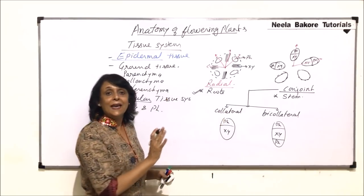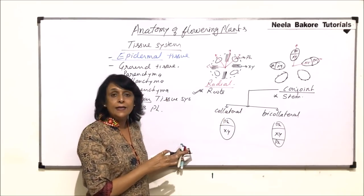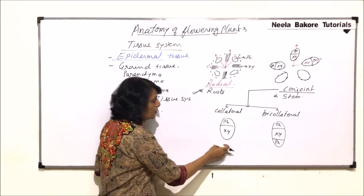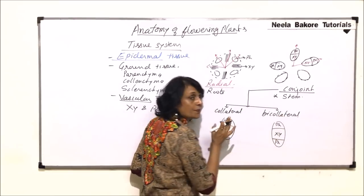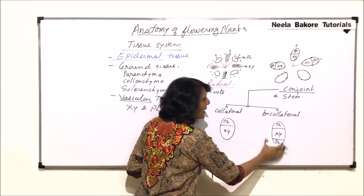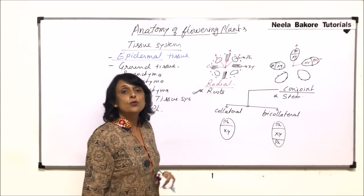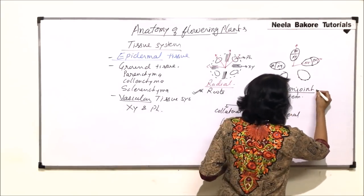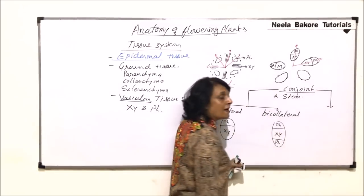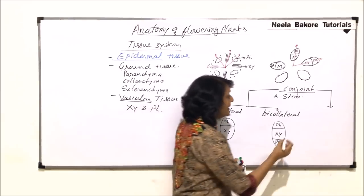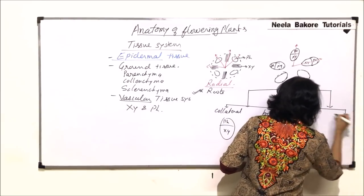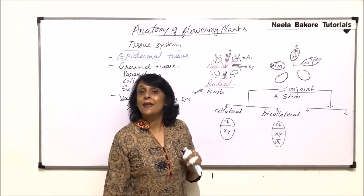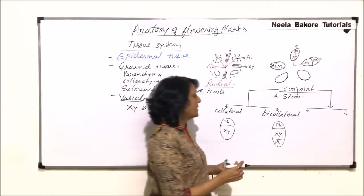In both cases, xylem and phloem are present on the same radius, so collateral and bicollateral are both conjoint vascular bundles. There is one more way we can classify these conjoint vascular bundles, and that is on the basis of the presence or absence of cambium, which is the lateral meristem.